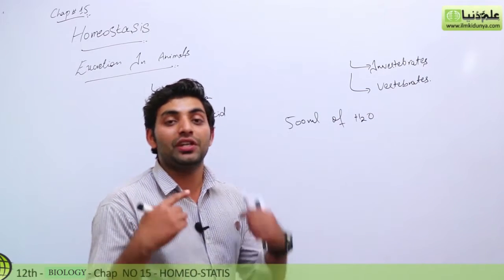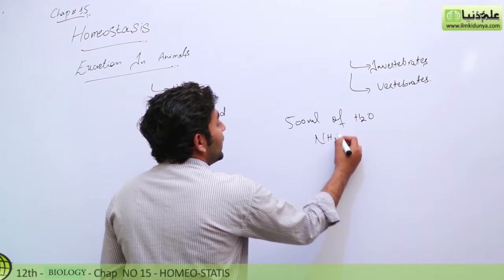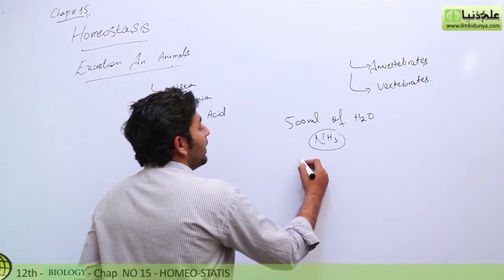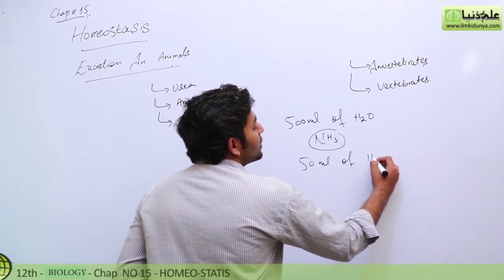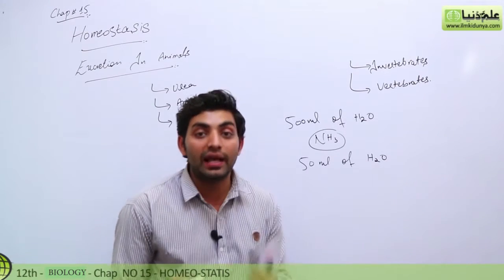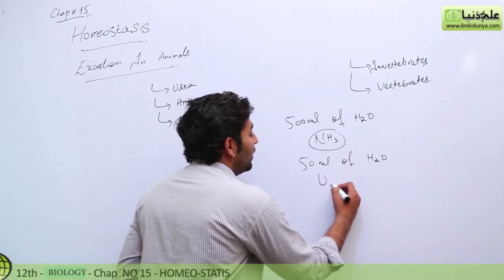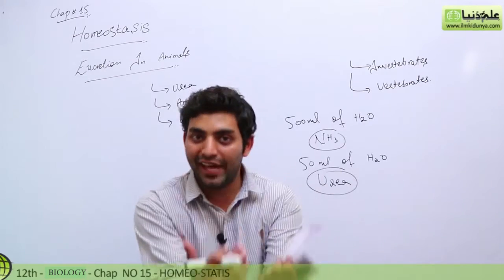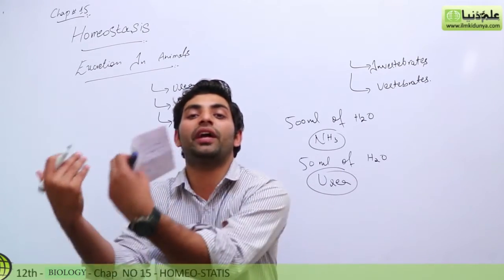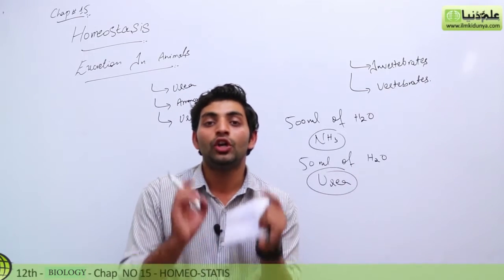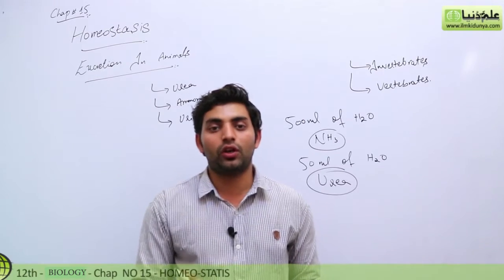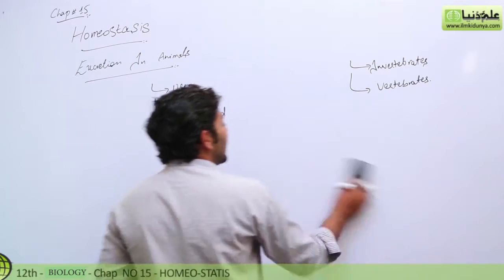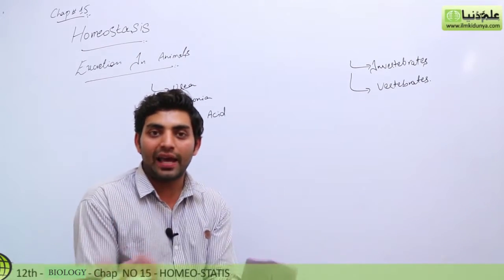To excrete one gram of nitrogen in the form of ammonia, 500 ml of water is required. However, as an alternative, if we want to excrete one gram of nitrogenous base with only 50 ml of water, we need urea. To produce urea, the body converts ammonia into urea through the urea cycle.